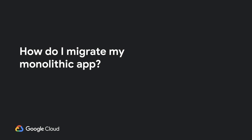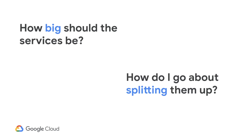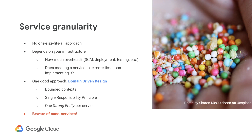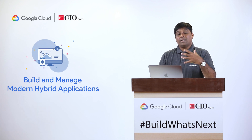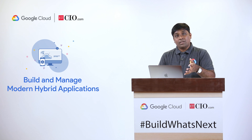Now that we have understood how microservices came about and what they are, let us look at how to migrate a monolithic application. The first set of questions we had to ask ourselves was: how big should a microservice be? And once we figure that out, how do we split a monolithic application into microservices? There is this concept called service granularity, which basically means how big or small should the microservice be. Of course, there is no one size fits all approach here, and it truly depends on the infrastructure, technology stack, and the business problem you are solving.